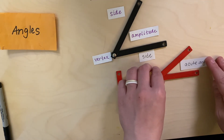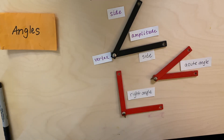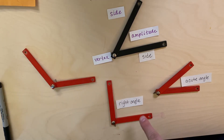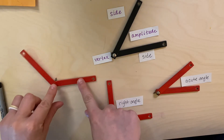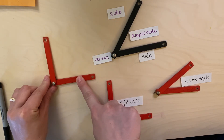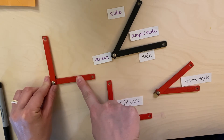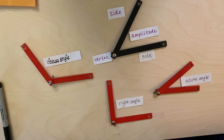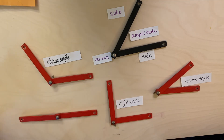An acute angle — I remember that as like saying 'a cute little angle.' Now the amplitude in this angle is much bigger than a right angle. Here's a right angle roughly, and this one goes past that point. An angle that is bigger than a right angle is called an obtuse angle.